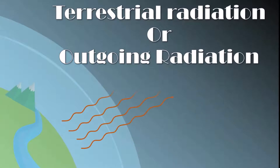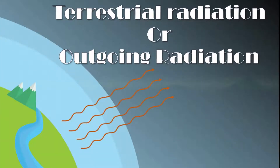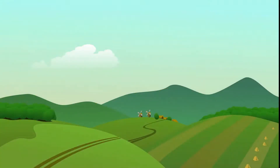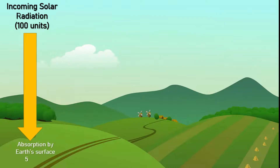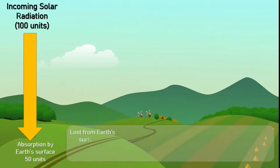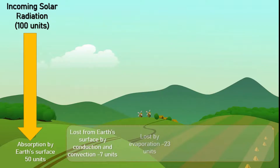Now let us see how outgoing, or terrestrial, radiation is returned to space. All 100 units of the incoming energy is returned back over time. First, we will understand how the 50 units of energy absorbed by earth's surface are released. Out of 50, 7 units are lost from earth's surface through conduction and convection, 23 units are lost through evaporation of water in soil and water bodies, and 20 units are lost by long wave radiation.